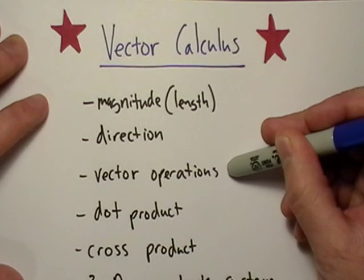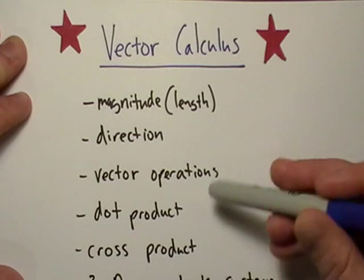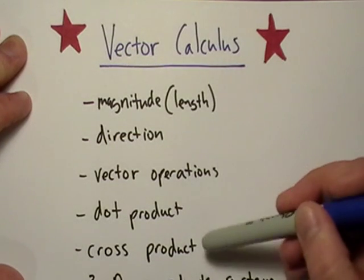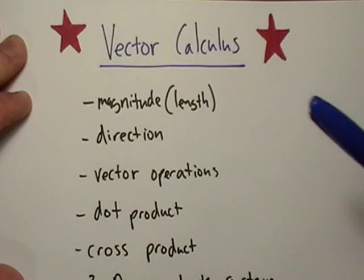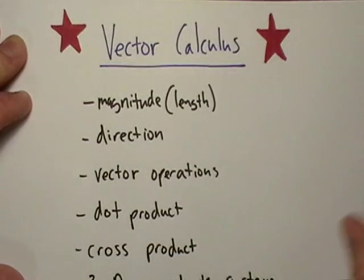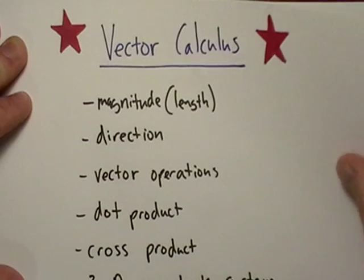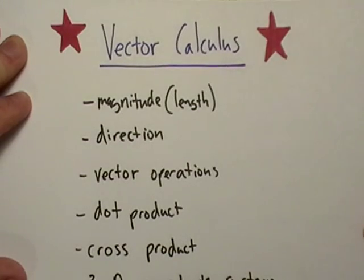Just a refresher, really, and then things like the dot product and the cross product. Those are some things that can easily be forgotten if you haven't worked with vectors in a while.